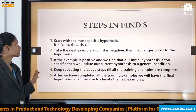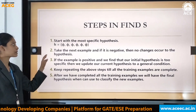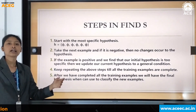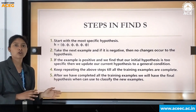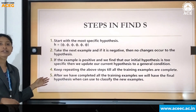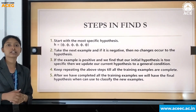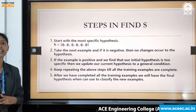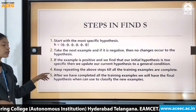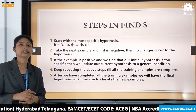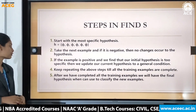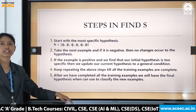The steps in Find S are: Step 1 — start with the most specific hypothesis, h = {phi}. Step 2 — take the next training example; if it is a negative example, stop and make no changes to the hypothesis. Step 3 — if the example is positive and the current hypothesis is more specific, generalize and update the hypothesis. Step 4 — keep repeating these steps until all training examples are complete. Step 5 — after completing all training examples, the final hypothesis can be used to classify new examples.